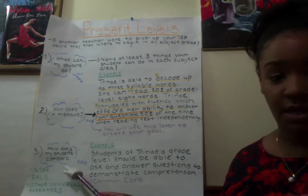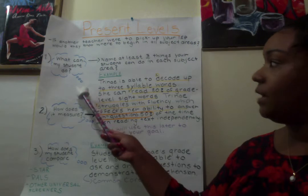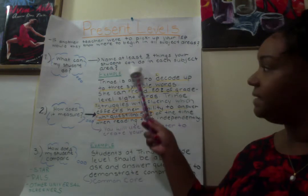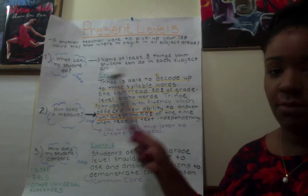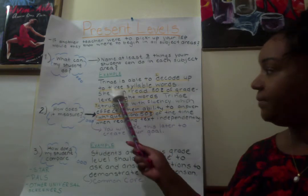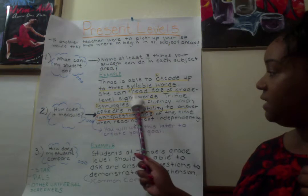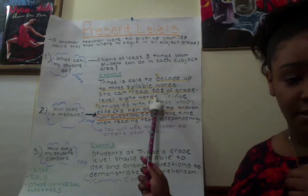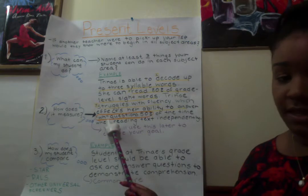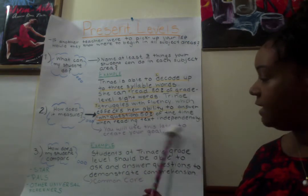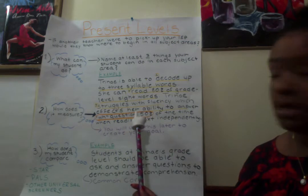The first thing is: what can my student do? It doesn't have to be limited to three things, but three things is what you should at least have in order to have strong present levels. For example: Trinae is able to decode up to three-syllable words — that's one. She can read 80% of grade-level sight words — that's two. Trinae struggles with fluency, which affects her ability to answer WH questions 50% of the time when reading independently — that's three.